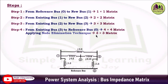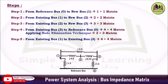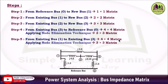One more reactance is left — j0.3 is connected between bus 1 and bus 3. In step 5 we consider that: from bus 1 to bus 3, now both buses are existing buses, so the matrix again becomes 4×4. We apply node elimination technique again to bring the final answer to 3×3. We start from the reference bus, then 1 to 2, bus 2 to 3, then 3 to reference, and finally consider j0.3.